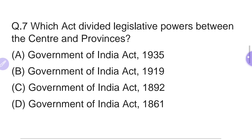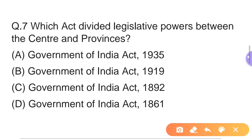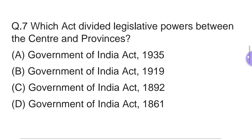Seventh question: Which act divided legislative powers between the center and the provinces? Options: A — Government of India Act 1935, B — Government of India Act 1919, C — Government of India Act 1892, D — Government of India Act 1861. The right answer is Option A — Government of India Act 1935, under which powers were divided between the center and provinces.